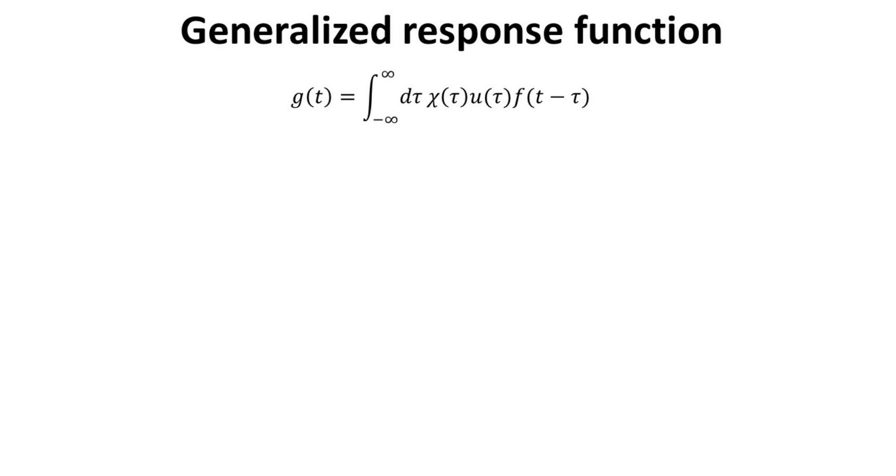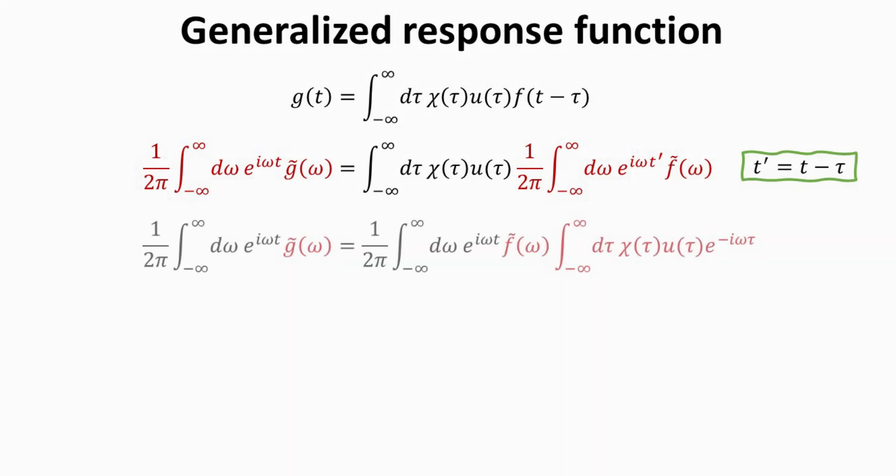Now, we are ready to perform the Fourier transformation. First, we substitute the gt and ft functions with their Fourier transform relations, expressed in terms of g tilde and f tilde omega. Here we define the variable t prime to be t minus tau. Next, on the right-hand side, we split the exponential kernel into two pieces, exponential i omega t and exponential i omega tau. This then allows us to recognize the integrand as highlighted, which must equal one another.